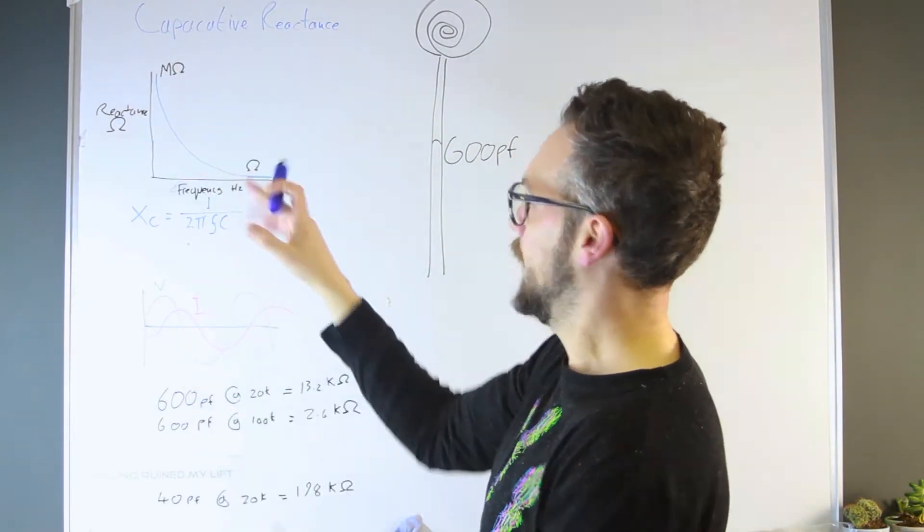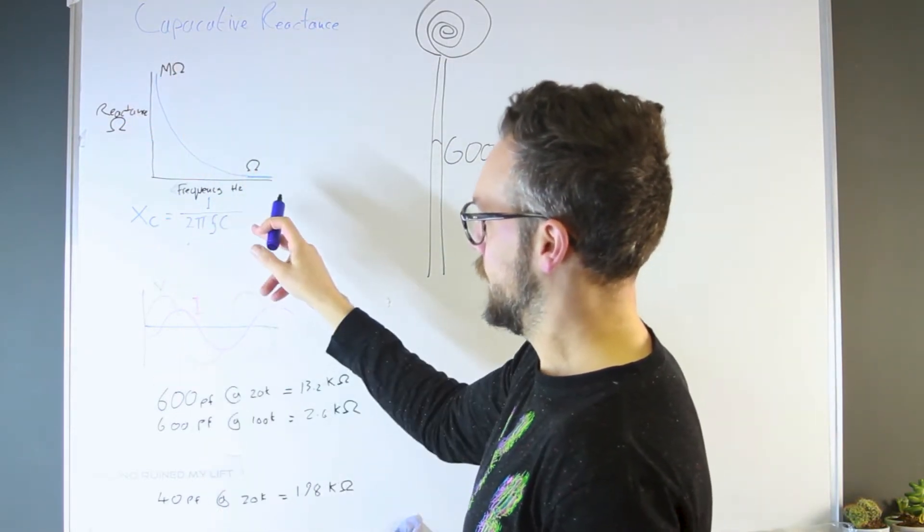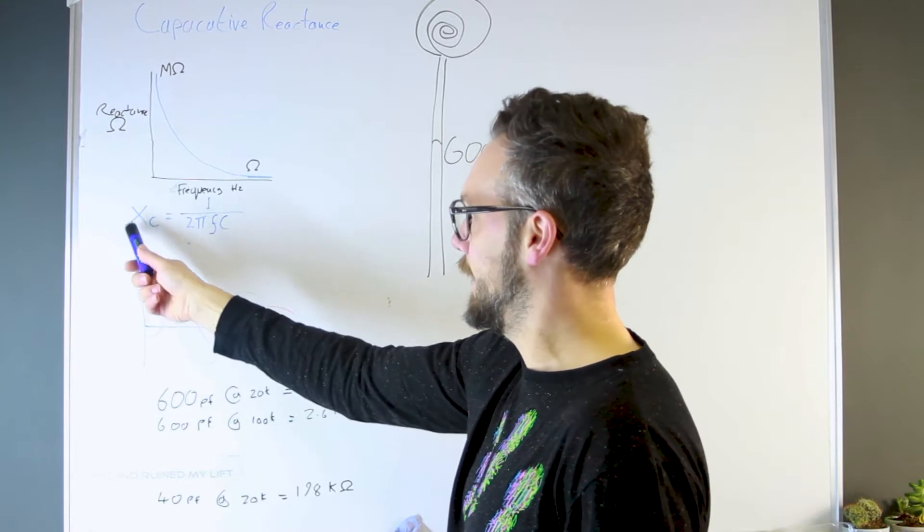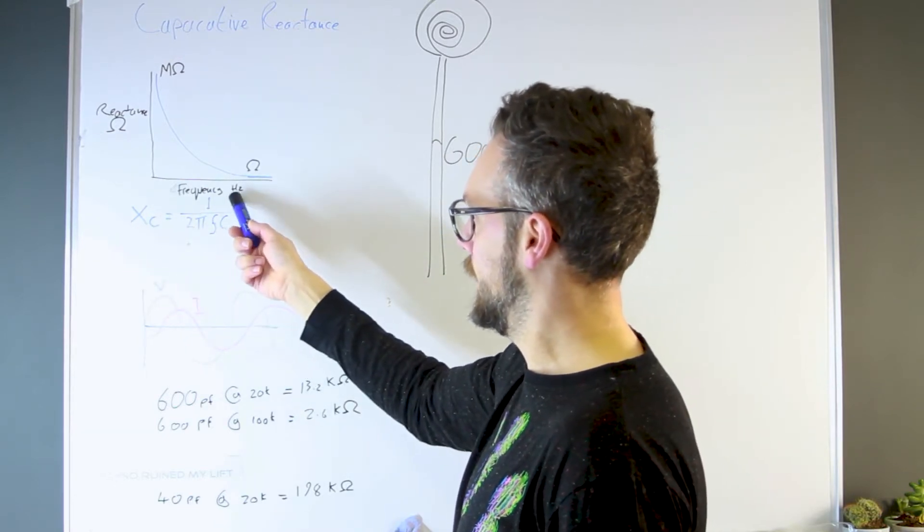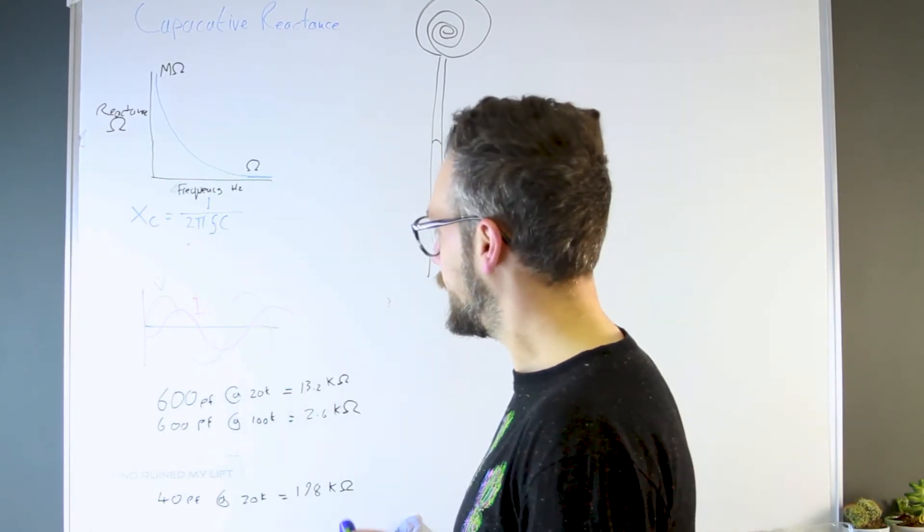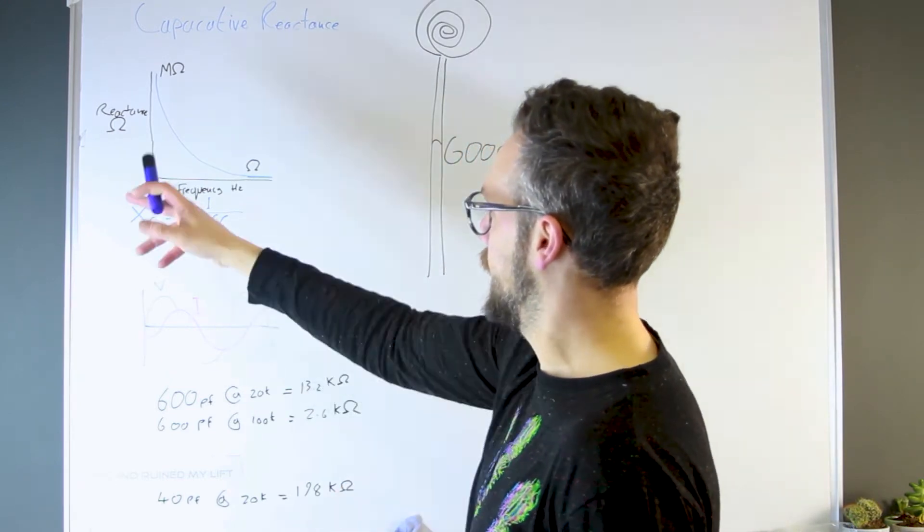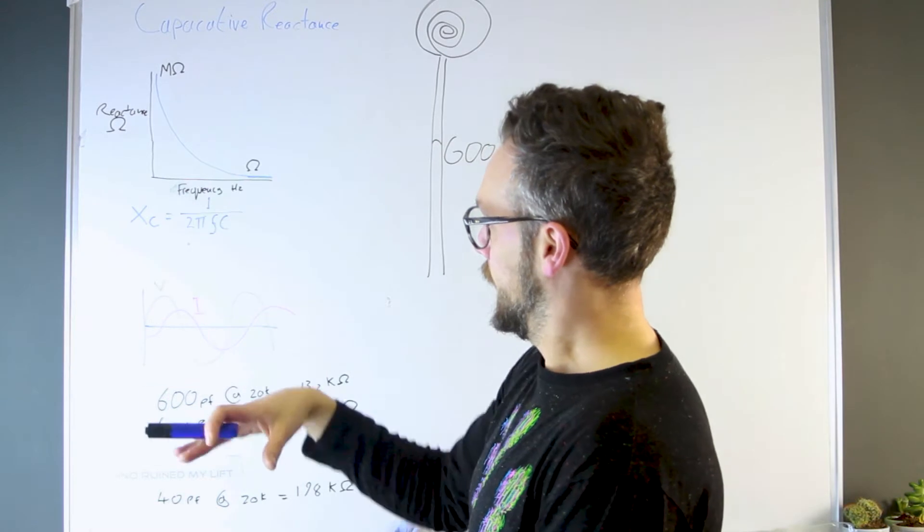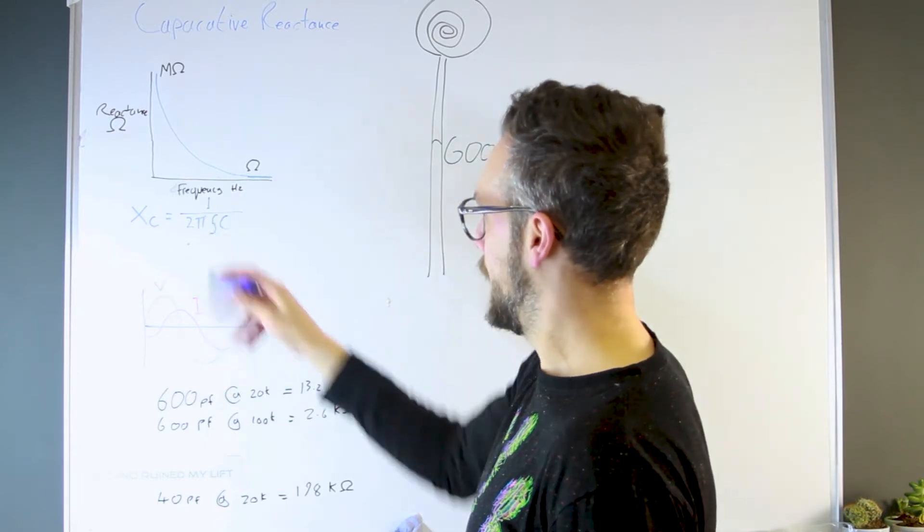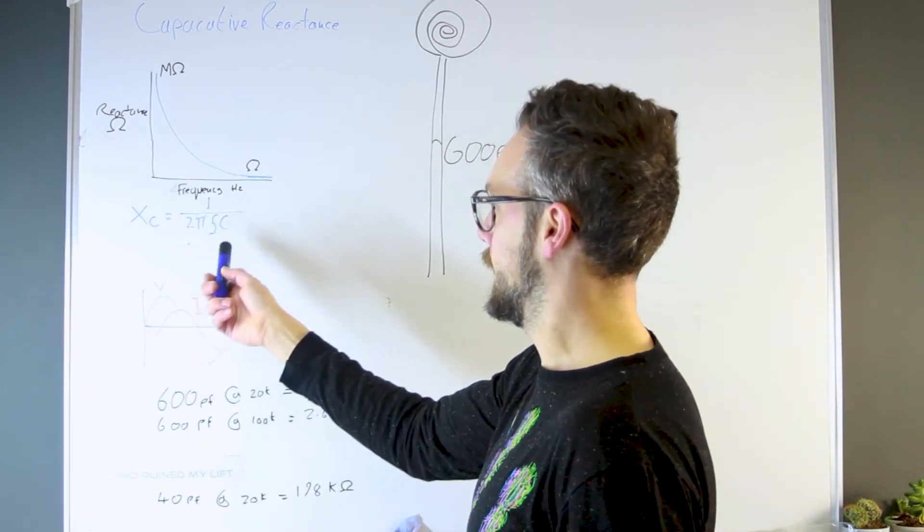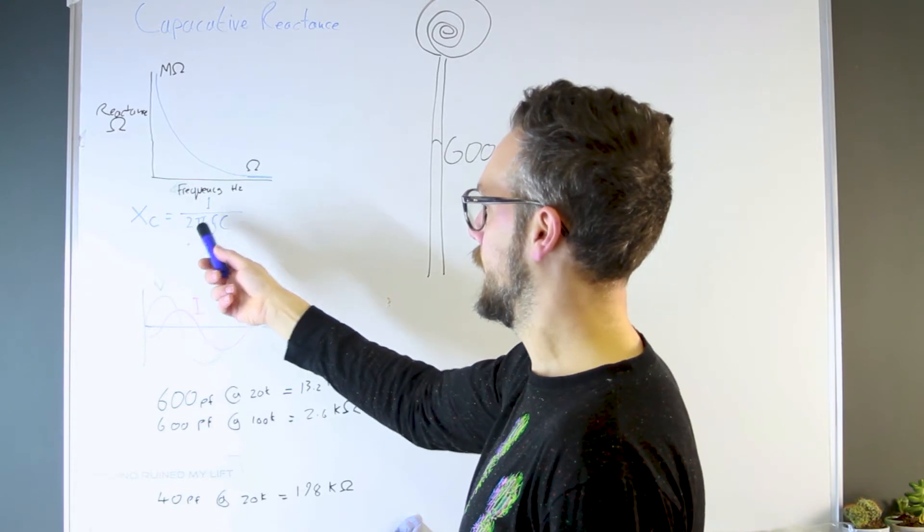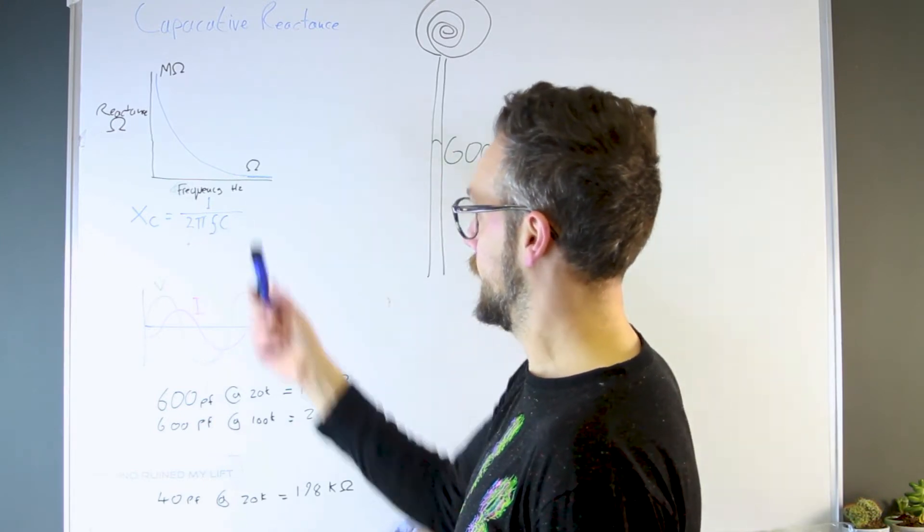So the formula for this capacitive reactance is Xc, which is capacitive reactance, is equal to 1 divided by 2π times the frequency times the capacitance. So as the frequency increases, the resistance goes down because you're dividing one by a larger and larger number. And the other way of reducing this is by reducing the capacitance. So if you can get that really small, because you're multiplying that by that, it's going to reduce the effect.